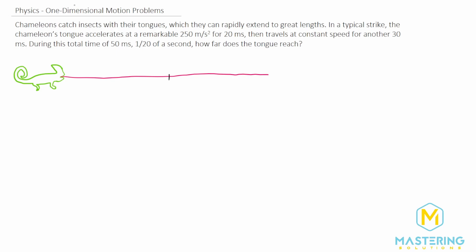We have section one where the tongue has barely come out, then from one to two it's accelerating, and then from two to three it moves at a constant speed for 30 milliseconds. We need to find the distance for each section and then add the two together.